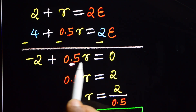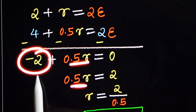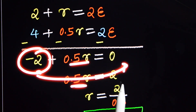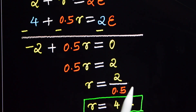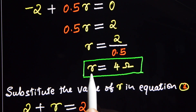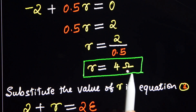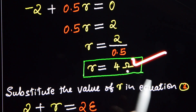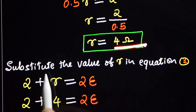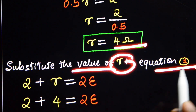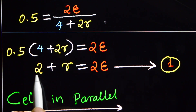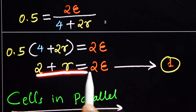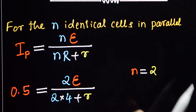So we have: 0.5 into small r equals 2. Taking minus 2 to the right side it becomes plus 2. Therefore 0.5 times small r equals 2, so r equals 2 divided by 0.5, giving r equals 4 ohm. This is the internal resistance of both cells — 4 ohm.